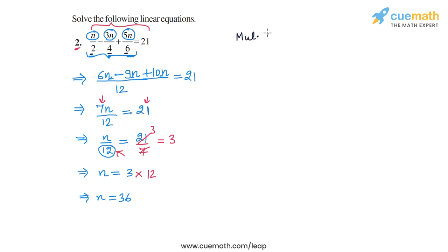So let's multiply both sides of the original equation by 12. So the original left hand side is n/2 minus 3n/4 plus 5n/6. And the original right hand side is 21.